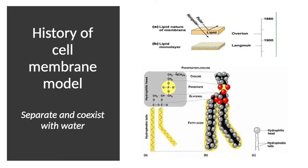In 1880, Overton found that the plasma membrane is basically made of lipid. He extracted the plasma membrane and found that the main substance is lipid. As you know, if you put a drop of oil in a glass of water, the oil sits on the surface because oil and water cannot coexist — they always separate. So the first feature of separating water from water is fulfilled.